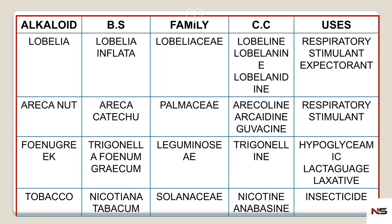For tobacco: the biological source is Nicotiana tabacum, which belongs to the family Solanaceae. The chemical constituents are nicotine and anabasine. Tobacco is used as an insecticide, for killing insects.